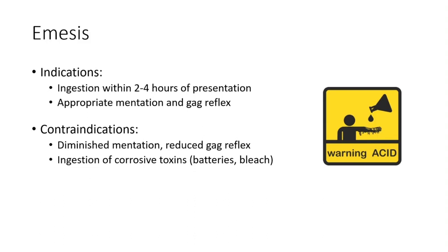A big contraindication with emesis is anything corrosive — and also anything sharp. Things that are sharp will cut on the way out; things that are corrosive will burn the esophagus when they come up, just as they'd burn your arm. Think battery acids, cleaning agents — those are ones where you should not induce vomiting. If you really need to get them out, consider gastric lavage.